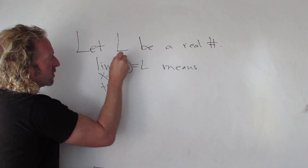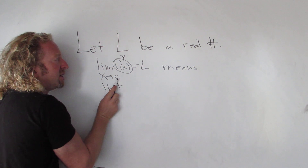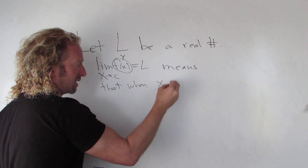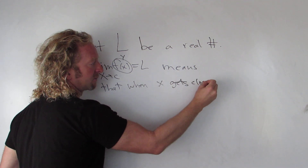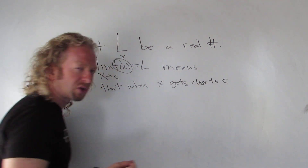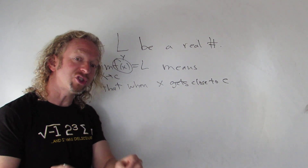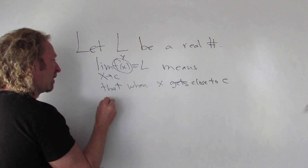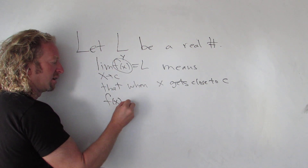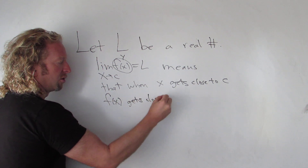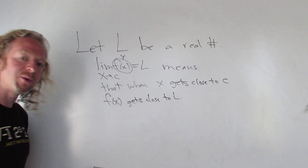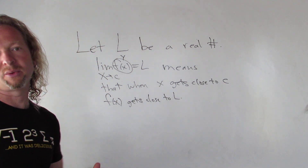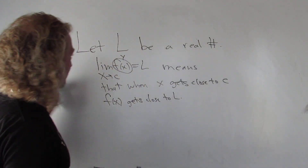Remember, f of x is the y value. So when the x value gets close to C, the y value gets close to L. You might ask, what does 'close' mean? As close as you like — you can literally get as close as you like. So when x gets close to C, f of x gets close to L. Now let's do a simple example so you can see what it means intuitively and graphically.